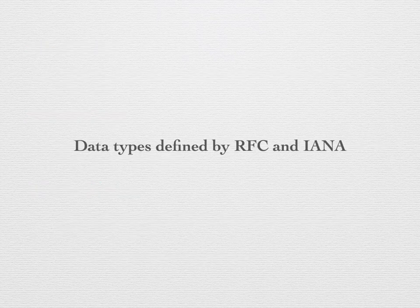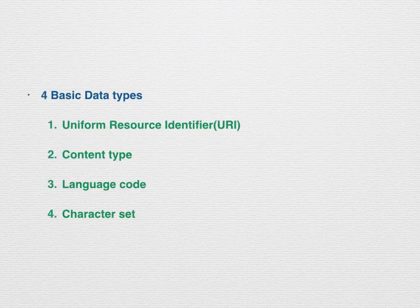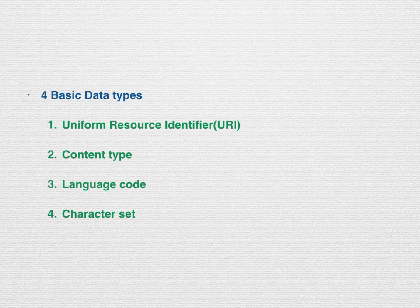The next category of data types are those defined in the documentation of RFC and IANA. RFC stands for Request for Comments, and IANA is the Internet Assigned Numbers Authority, an organization responsible for allocating IP addresses, domain names, etc. There are four basic data types in this category: Uniform Resource Identifier, Content Type, Language Code, and Character Set.